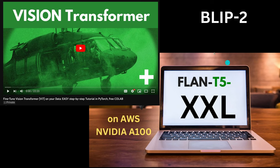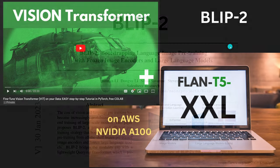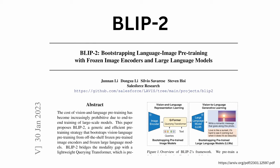Hello community, today we combine our vision transformer knowledge and our LLM knowledge — vision and language. There is a beautiful technique that we can now use to pre-train vision language models based on the transformer architecture. This beauty is called BLIP-2: Bootstrapping Language-Image Pre-training with Frozen Image Encoders and LLMs.